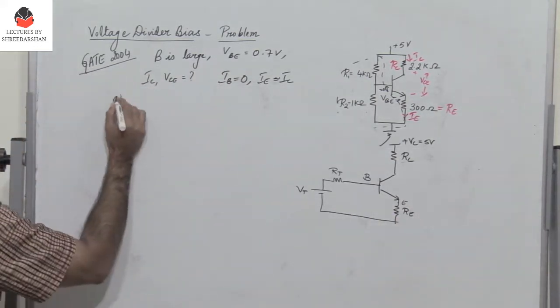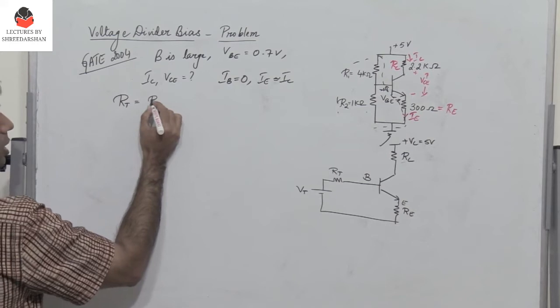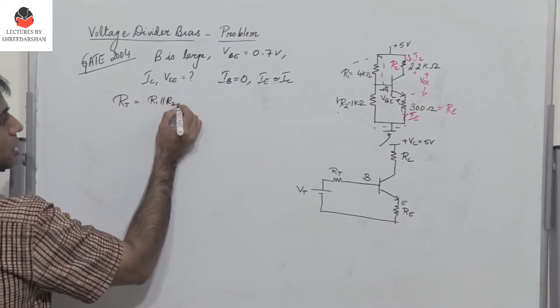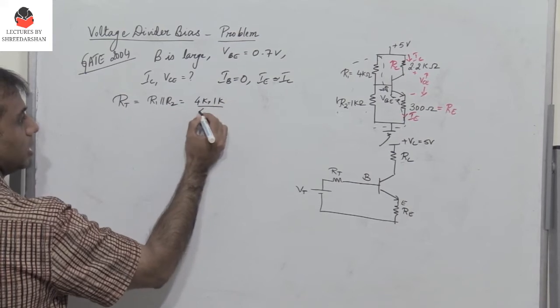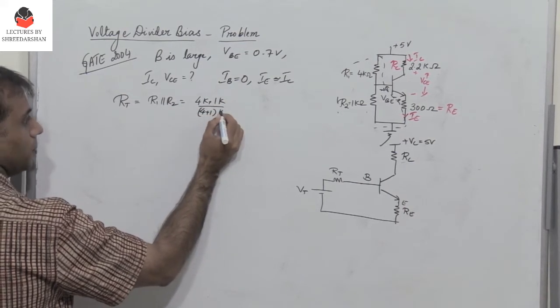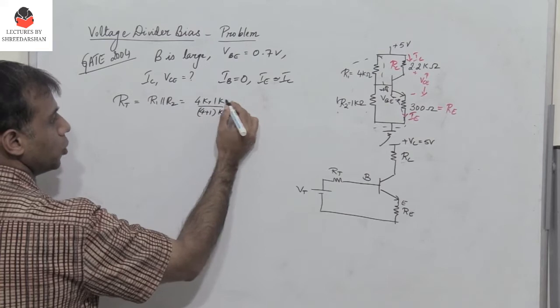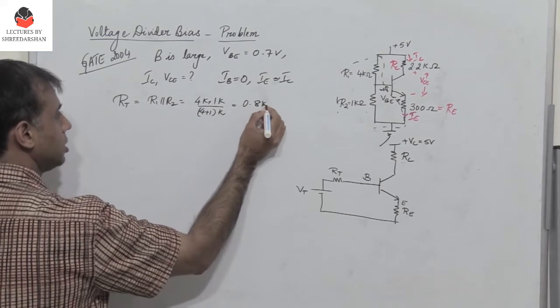Now what is Rt? The Thevenin's resistance is R1 parallel R2. So it's going to be 4k into 1k divided by 4 plus 1k. That's going to be 4 by 5, which is 0.8 kilo ohms.